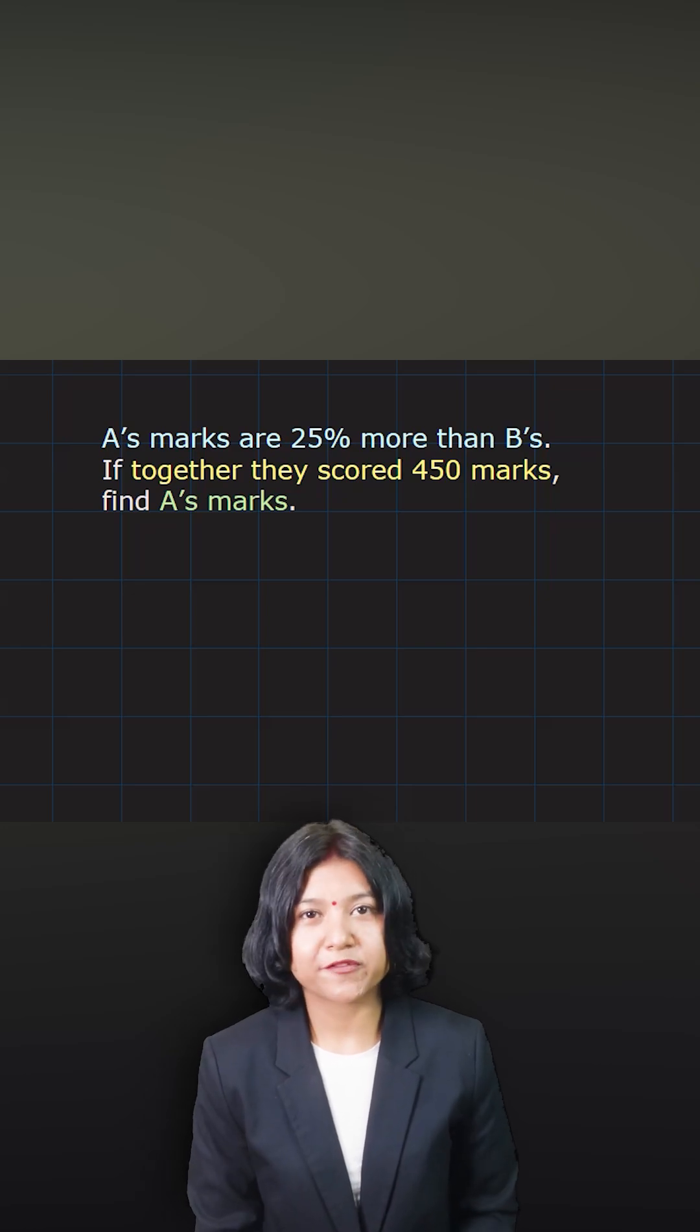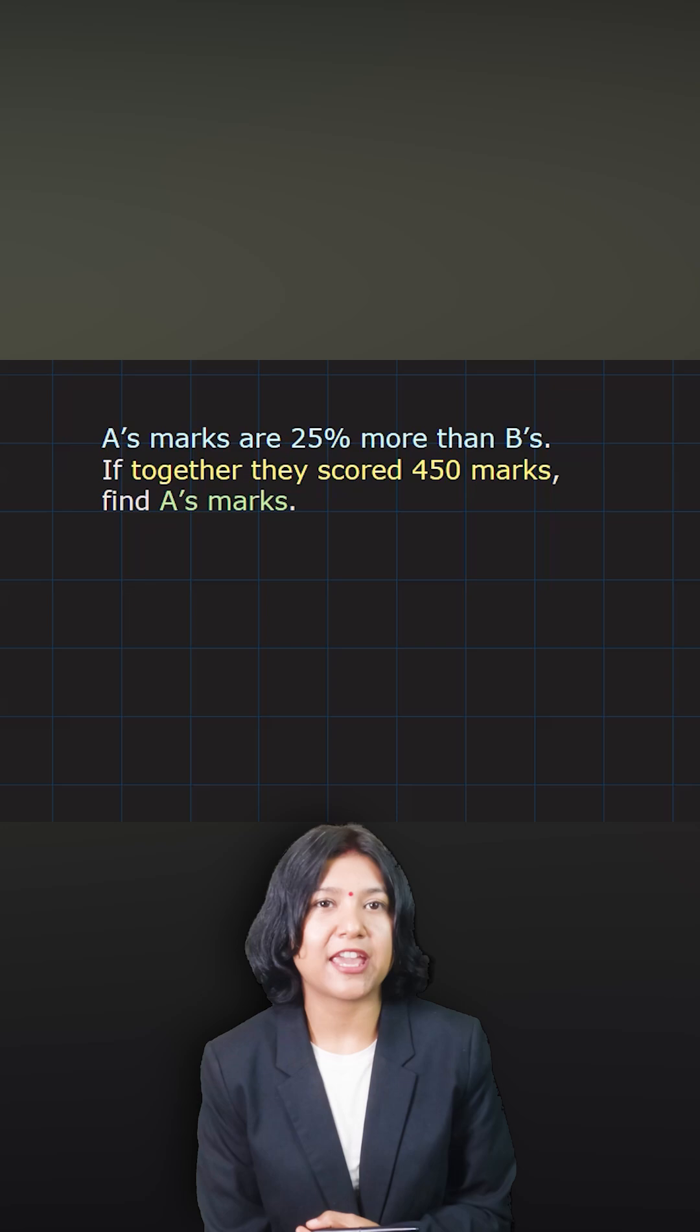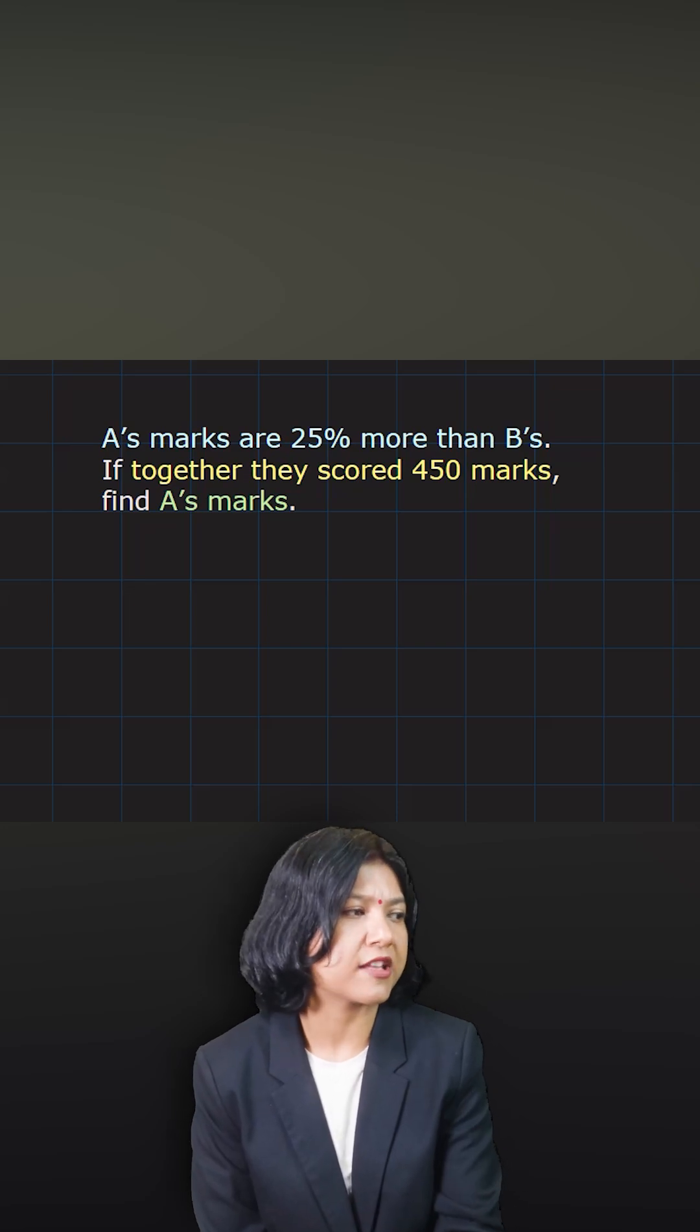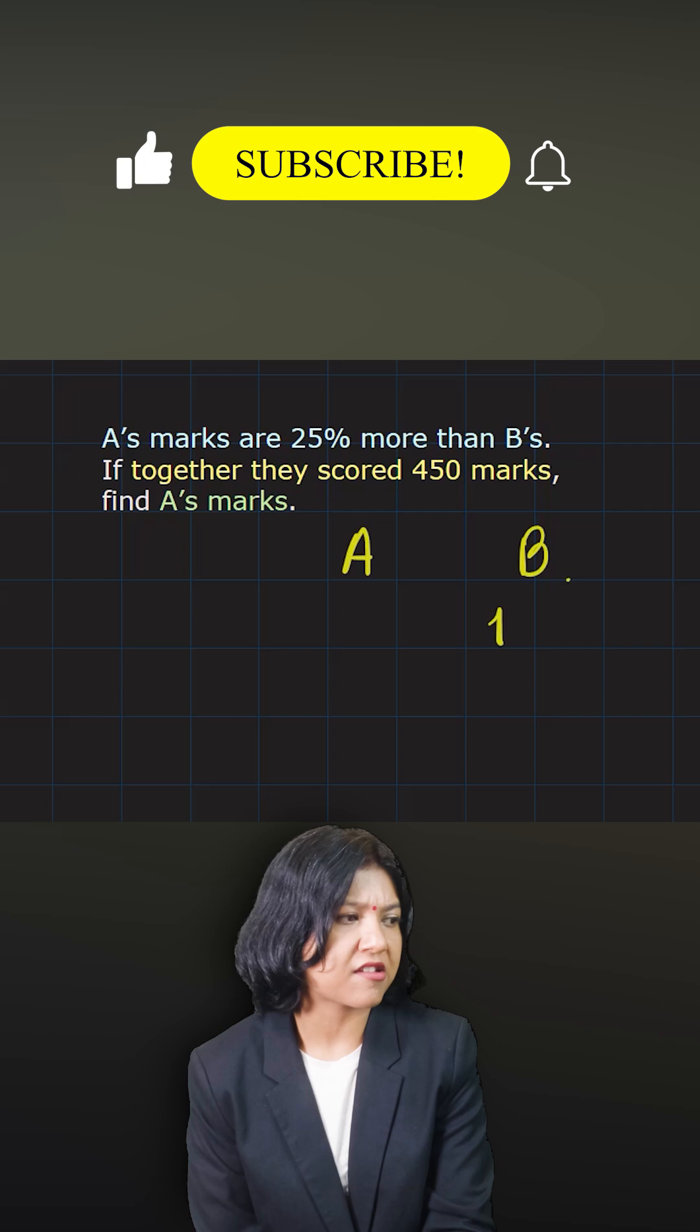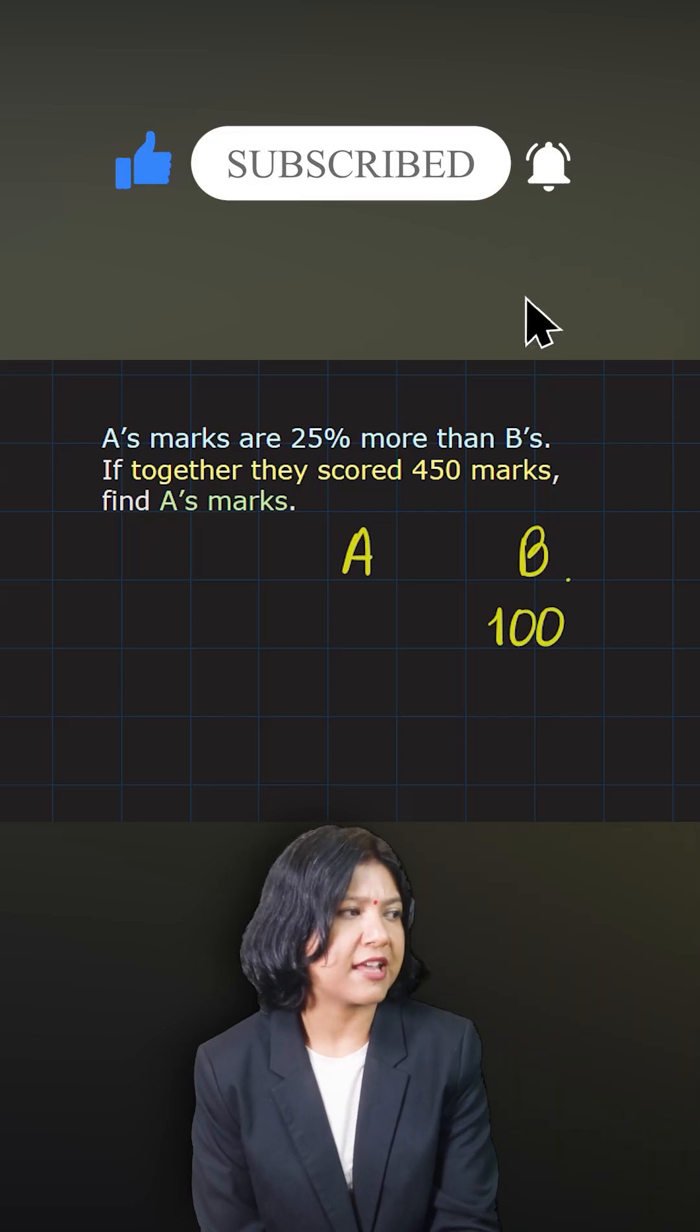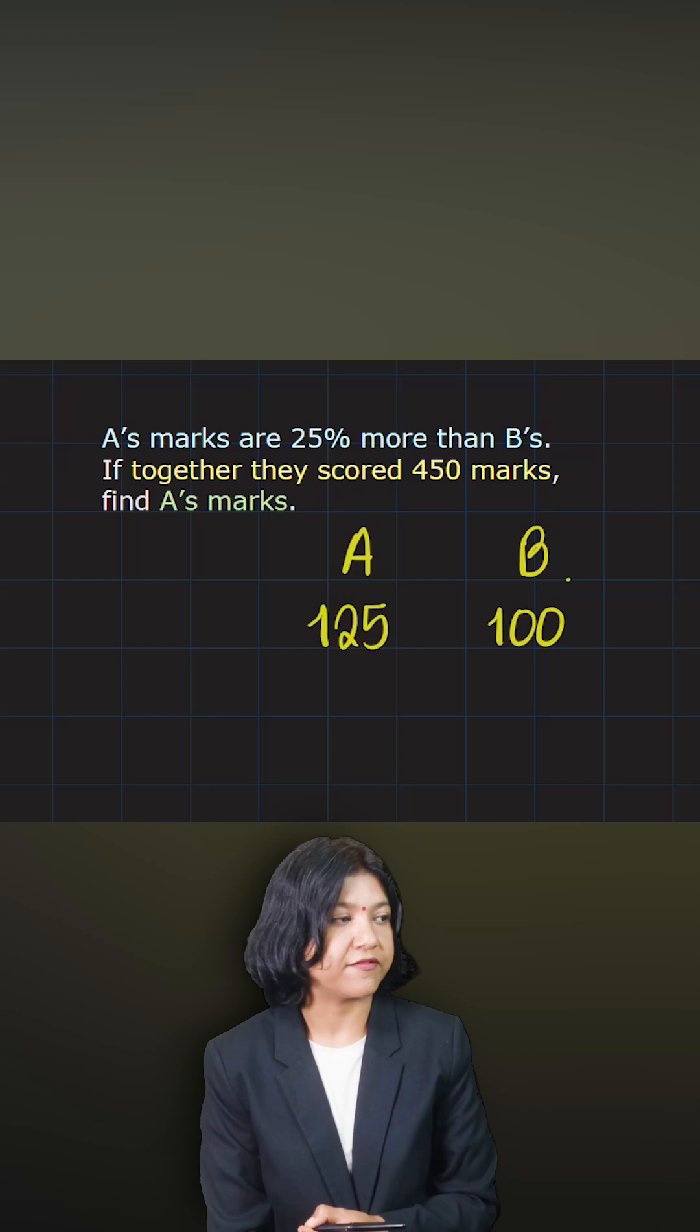This question talks about one of the students having more percentage than the other. So you have A's marks 25% more than B. Note that if it is 25% more, I can say that B has scored 100% while A must be scoring 125% because of addition of 25.